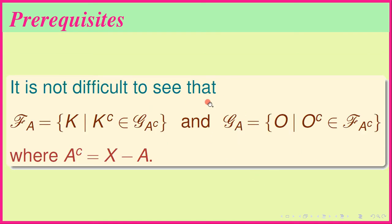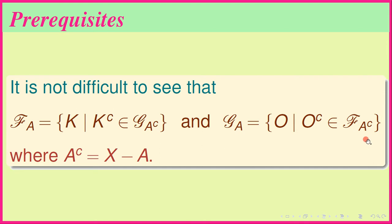It is not difficult to see that the family of all closed subsets of X containing A and the family of all open subsets of X contained in A are related: the open subsets O contained in A correspond to those whose complements O^c belong to the family of closed subsets of X containing A complement, where A complement equals X minus A.